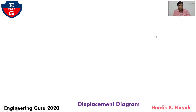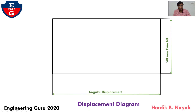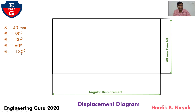Let us start with the displacement diagram. Simple harmonic motion is given for both outstroke and return stroke. I will share one easy technique for drawing the displacement diagram of simple harmonic motion. Draw one rectangle from the given data: lift of the follower on the y-axis equal to 40 mm, and on the x-axis angular displacement — theta-o equal to 90 degrees, theta-d equal to 30 degrees, theta-r equal to 60 degrees, and theta-d equal to 180 degrees.